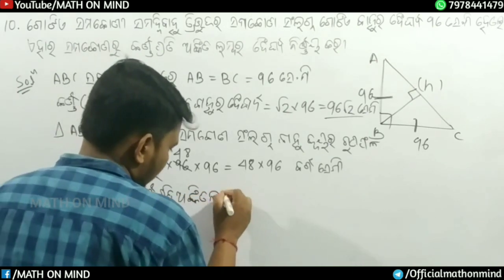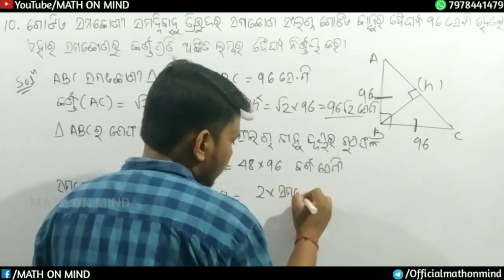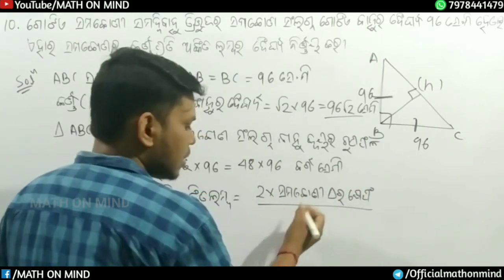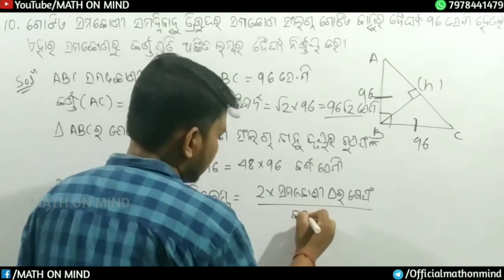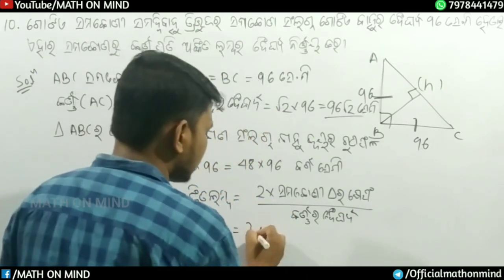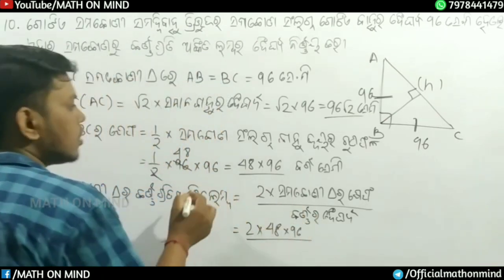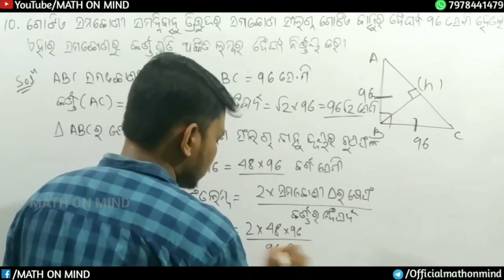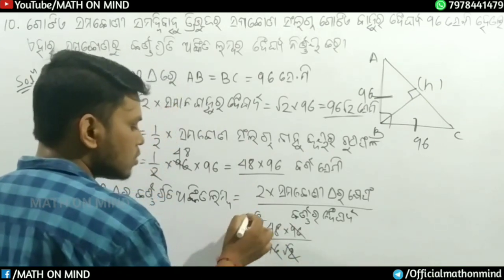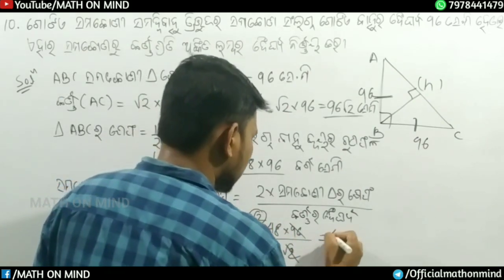Using the formula: area equals root 2 into the side measurement divided by 4. We have root 2 into 96 root 2, which simplifies as: 96 root 2 divided by 2. The root 2 terms cancel, giving us 2 into 2 equals 4. This becomes 48 root 2.